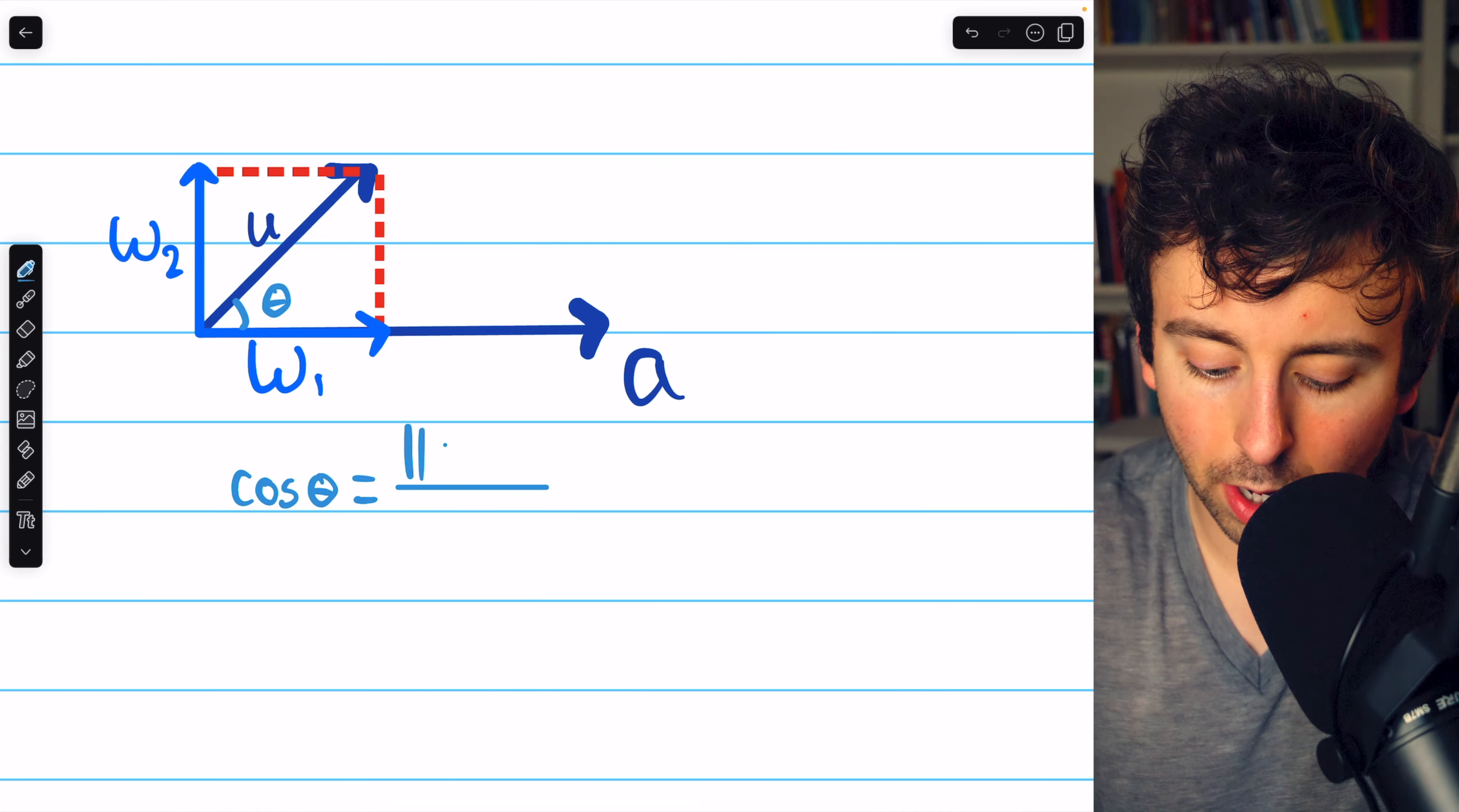Then we'll divide by the magnitude of a squared. The magnitude of a is just the square root of the sum of the squares of the components. So 1 squared plus 0 squared plus 5 squared, all in a square root. That is the square root of 26. When we plug this in, it's going to get squared, and so the square root will go away. The magnitude of a vector squared is the same as dotting that vector with itself.